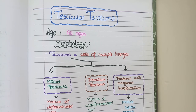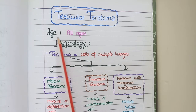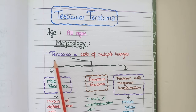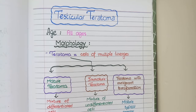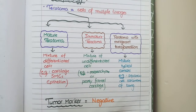Testicular teratomas can occur in people of all ages, unlike other testicular tumors that occur at a specific age group. A teratoma is a tumor mass arising from all three germ layers — ectoderm, endoderm, and mesoderm — with potential to develop into cells of all types such as epithelium, endothelium, bone, and cartilage. Testicular teratomas are classified into three types: mature teratomas, immature teratomas, and teratomas with malignant transformation.